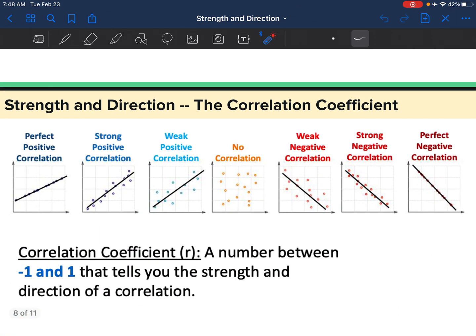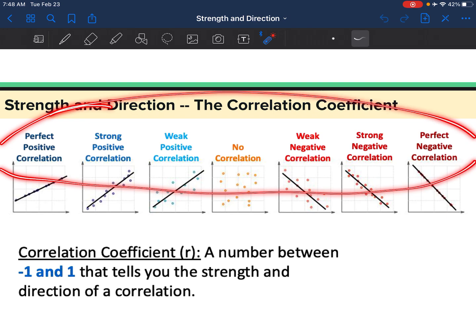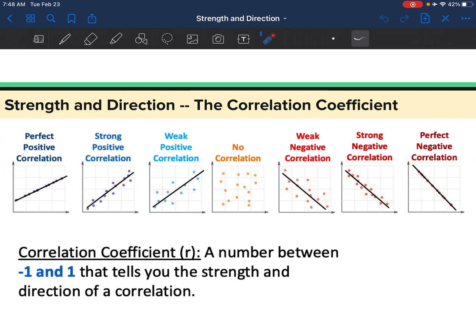And we put that all together. We can describe it like you see here. But we can also describe it with something called the correlation coefficient or R, lowercase R here. And this is a number between negative one and one that describes the strength and the direction of your correlation.